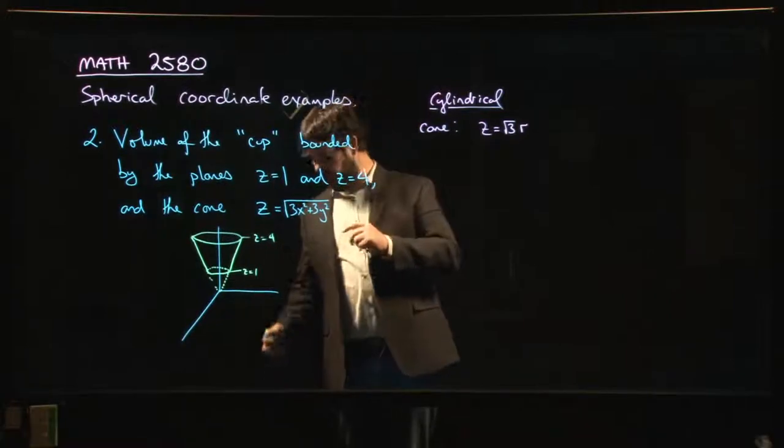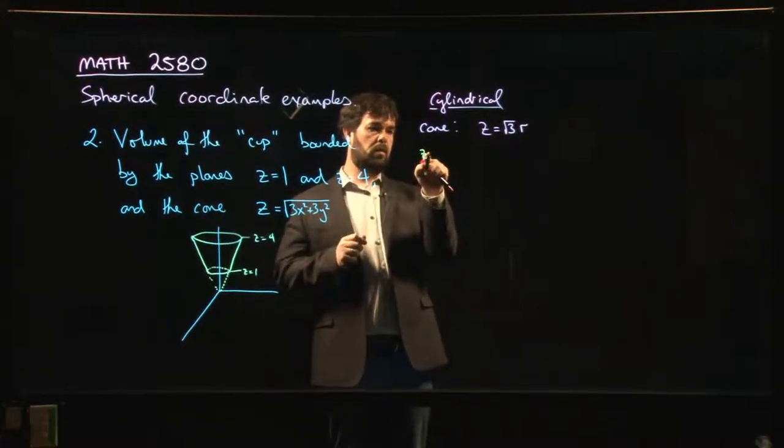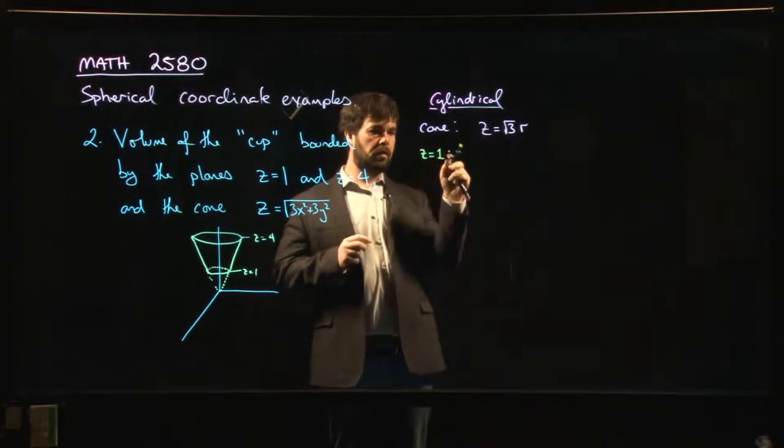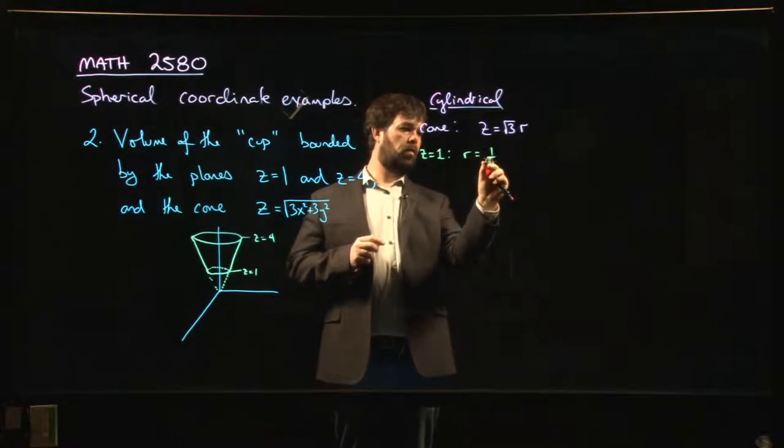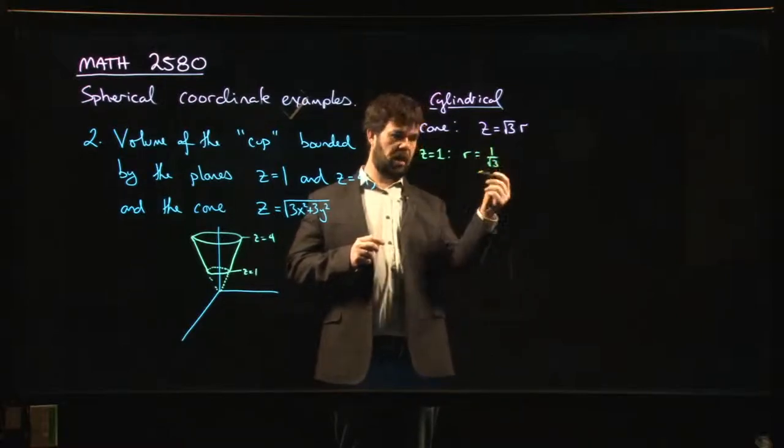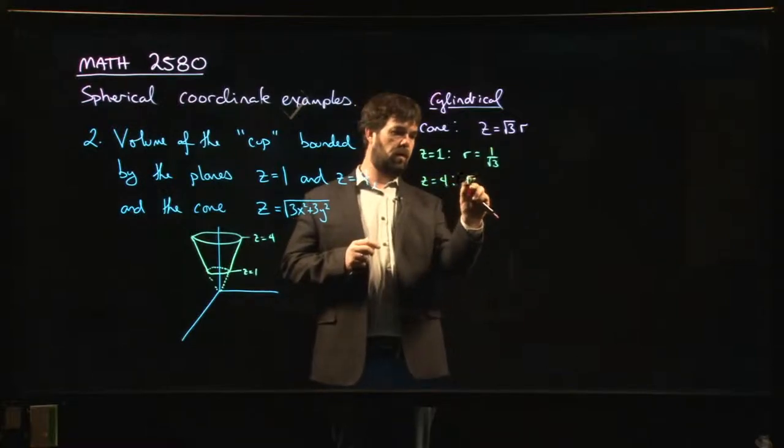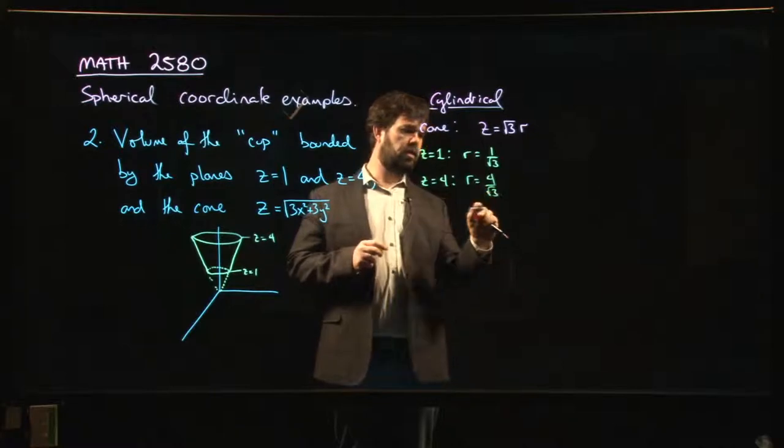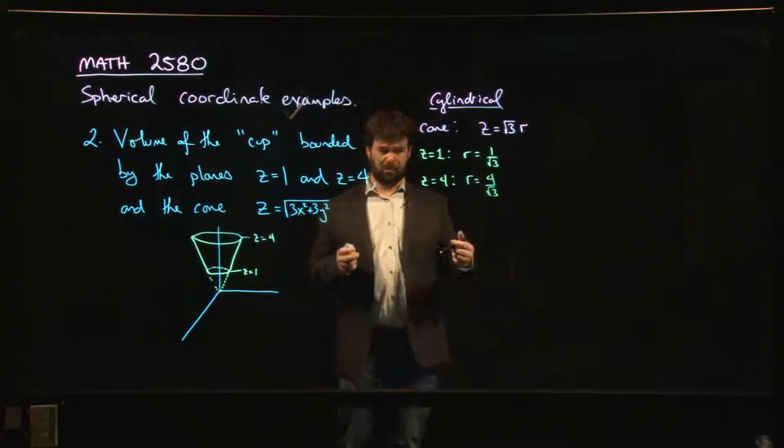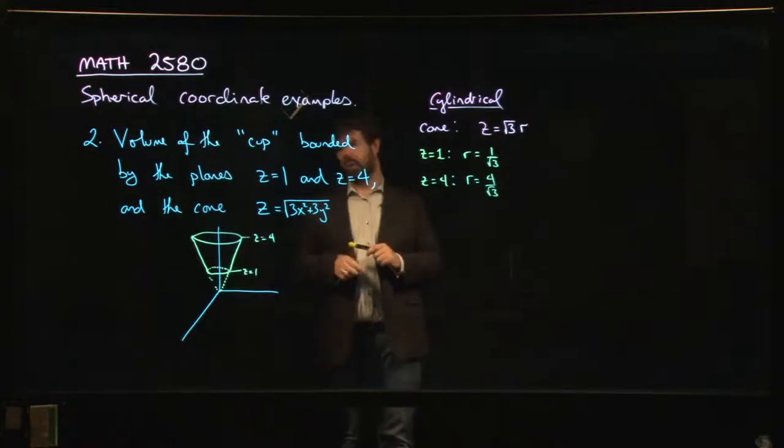And we can kind of work out intersections. When z is equal to one, we get r is one over root three. That's not so bad. That's a circle. When z equals four, we get r is equal to four over root three. Aside from the fact that there's some square roots in there, and maybe those look a little ugly, that's not so bad.